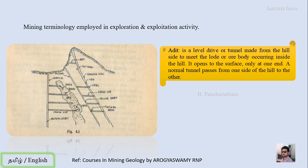The next term is adit — a level driven or tunnel made from the hillside to meet the lode or ore body located inside the hill. It opens to the surface at one end only. A normal tunnel passes from one side of the hill to the other, whereas an adit opens on one side and connects to the ore body on the other side.